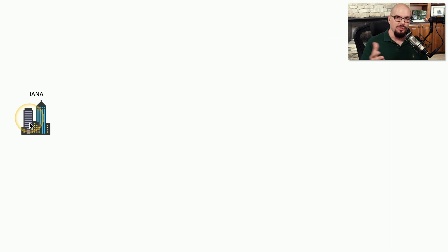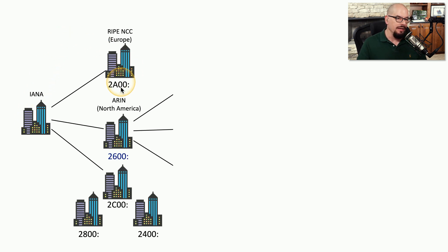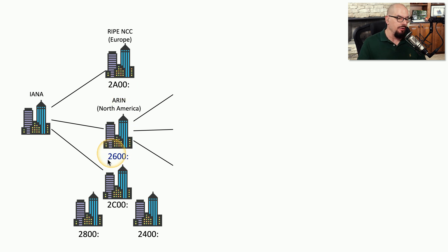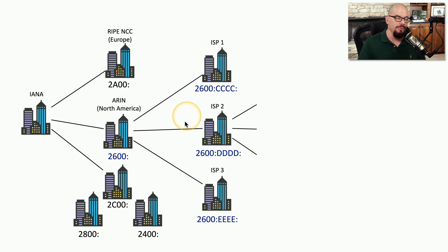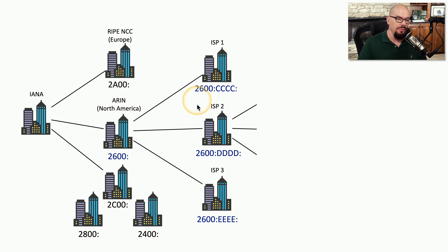Here's the process that this takes. We'll start with an Internet Assigned Numbers Authority that is going to provide a block of addresses to different regional internet registries. The registry in Europe might be assigned A00. In North America, we have multiple blocks that are assigned — it could be 2600 or 2400 — and those would then be assigned to individual internet service providers. So in North America, our regional internet registry might take the 2600 block and assign different subnets to different ISPs. If you're on ISP1, you might be assigned 2600:CCCC.